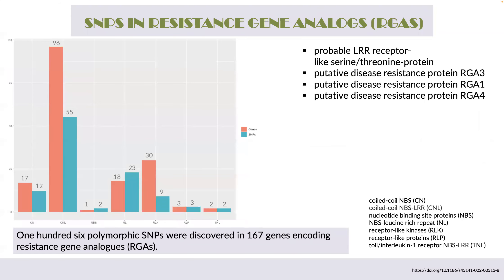For SNPs in resistant gene analogues (RTAs), we identified 106 polymorphic SNPs in 167 genes including RTAs. Using information from a previous study by researchers from the Philippines who categorised RTAs in the Musang King genome, we searched for SNPs and genes in our species. The CNL class had the highest number of genes and SNPs, while the lowest numbers were in NBS, RLP, and TNL classes. SNPs in RTAs could be useful for developing functional markers for screening germplasm with resistant or tolerance characteristics.